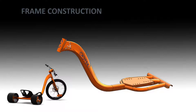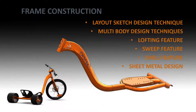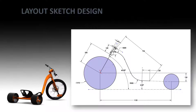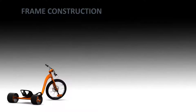The frame is probably the most complicated part, and it involves some interesting techniques. We're going to look at layout sketch design, multi-body design techniques, lofting features, sweeps, and we'll use the shell to scoop out the internals of the tube. There's also a little bit of sheet metal for the seat bracket. The layout sketch is a very powerful technique — if done correctly, it allows very quick design modifications and can reduce rebuild errors in SolidWorks.